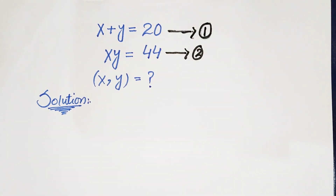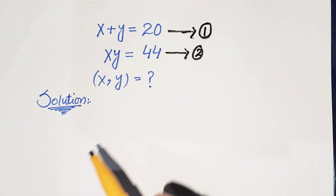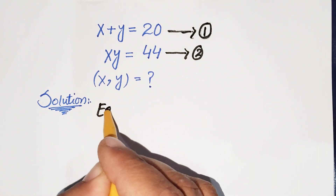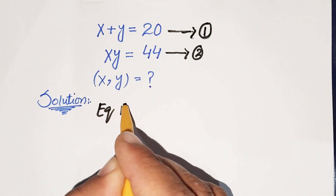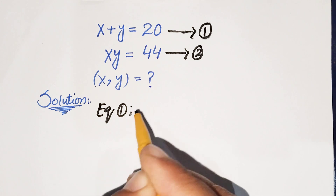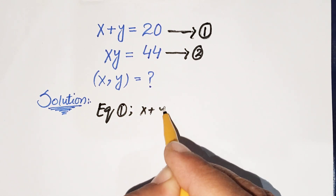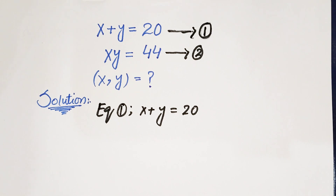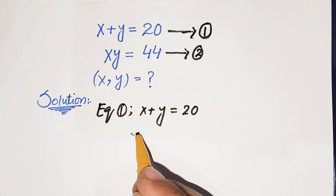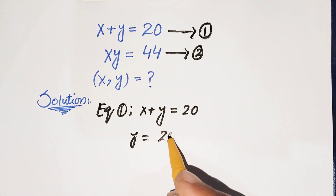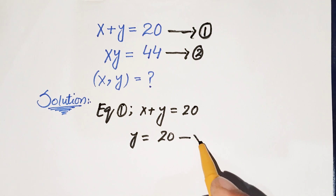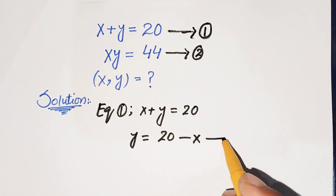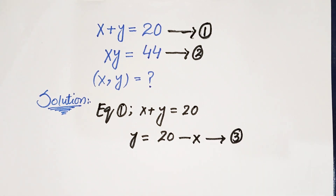Now we are going to solve x plus y is equal to 20. From equation 1, x plus y is equal to 20. We shift x to get y is equal to 20 minus x. Let's call this equation number 3.